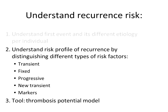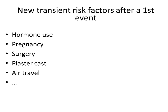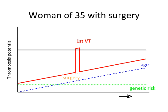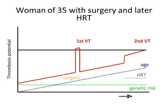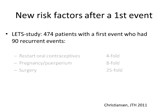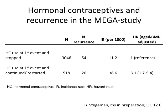Another important group is exposure to new transient risk factors after a first event — for instance, a person who subsequently starts using hormones again, becomes pregnant, or has surgery. Using the model, our woman of 35 who had surgery has in principle a low thrombosis potential and it will take very long for her to develop a recurrence. Unless she starts taking hormonal replacement therapy at some point — that will increase her thrombosis potential and she will develop a recurrent event much sooner. There are not many studies on this, but data from the LED study, though small with only 90 recurrent events, clearly showed that recurrence risk was very much increased when a person was again exposed to such a transient risk factor.